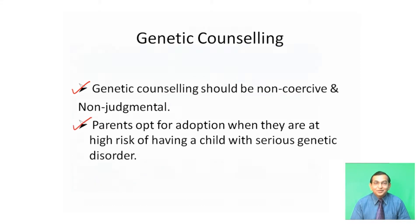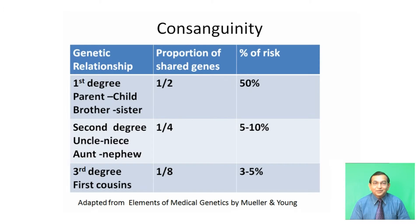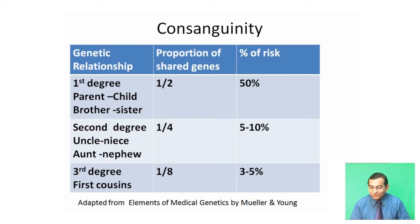Consanguinity — what is consanguinity or consanguineous marriage? Marriage between blood relatives is called consanguineous marriage. There are three major types of genetic relationships: first degree, second degree, and third degree.